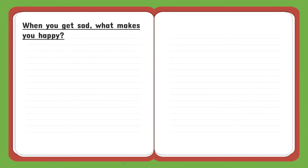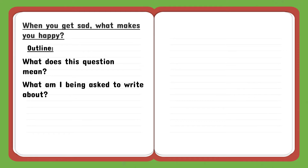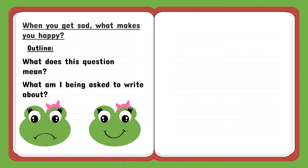Let's put this into practice. Assume you're given a question like: 'When you get sad, what makes you happy?' With a question like this, I'd advise that you get your notepad or a separate sheet of paper and build up your outline. The outline is going to be a guide that makes it easier for you to write. In your outline, ask yourself: What does this question mean? What am I being asked to write about?